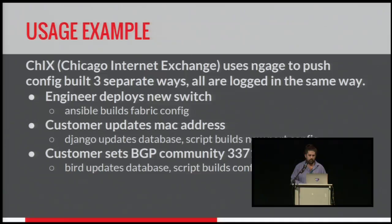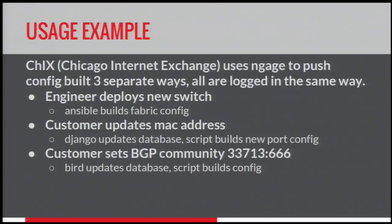For example, if using it in different spots — for the internet exchange, when we get a new piece of hardware in, that's completely done by Ansible, and then you push the initial config with Engage. We also MAC lock ports, so if a customer wants to change a router, they have to log into our portal and update their new MAC address. This updates the database, which builds a config and calls Engage. The same thing with BGP driven events — we have a layer 2 ACL set up, so customers can tag it with 666 and it will drop that traffic just to their MAC address on the whole fabric, and it's all using the same Engage to push it.